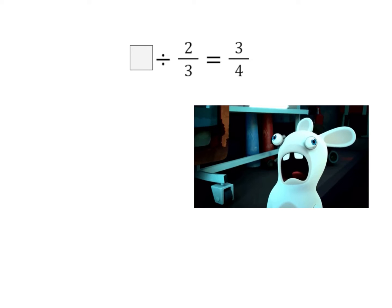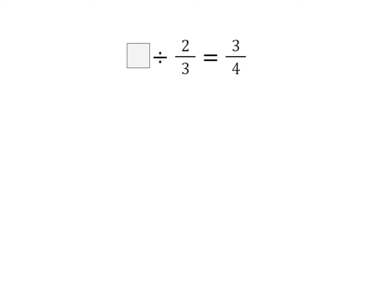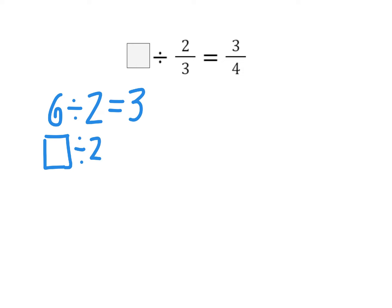These problems can look frightening, but they don't have to be. The key is to change the problem into easier numbers that we're very familiar with. So let's take a look at the problem: 6 divided by 2 is equal to 3. If I was trying to find the missing dividend — a number divided by 2 is equal to 3 — what would I do to figure out that missing number is 6? I would multiply my quotient, 3, by the divisor, 2, and I would get 6. We're going to do the same thing with our fraction problem.